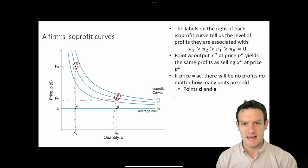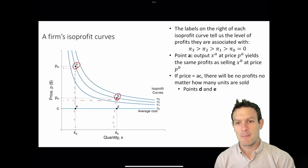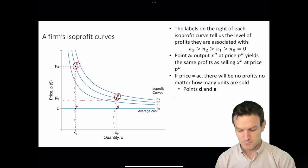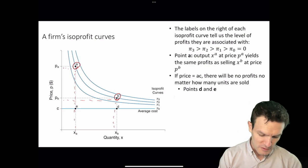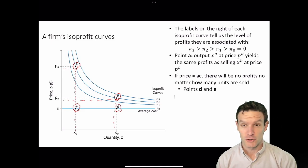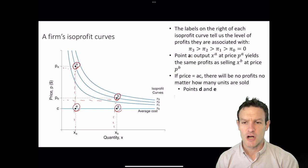When we contrast points A and B, we can see that at point A the firm is charging a high price but producing a low quantity, while at point B it's charging a lower price and producing a large quantity. Both points result in the same amount of profit — the same revenues minus costs. If the price equals the average cost, there will be no profits no matter how many units are sold. Points E and D are on the isoprofit curve where price equals average cost, so the firm makes zero profits.